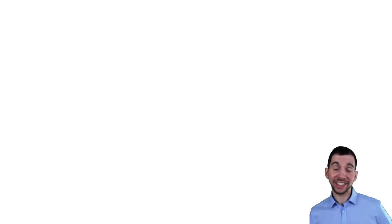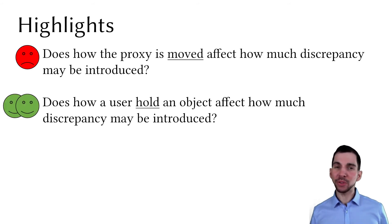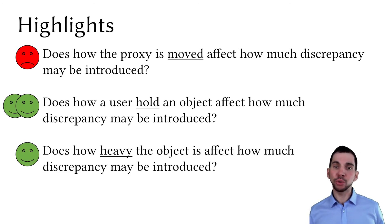To summarize the highlights of our studies, we could not identify whether movement trajectory requires special attention when designing illusions. In contrast, both studies provided very strong evidence that how a user holds an object does not affect the possible disparity, and therefore can probably be neglected when incorporating illusions. Similarly, study 2 suggests that object masses below 500 grams play an insignificant role, which accounts for most everyday objects.